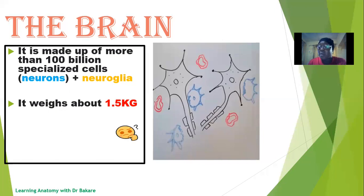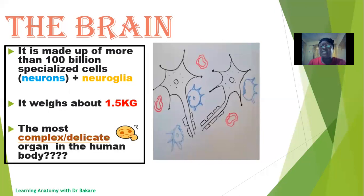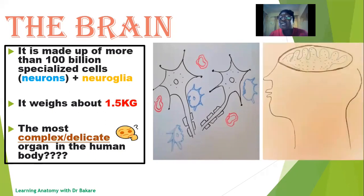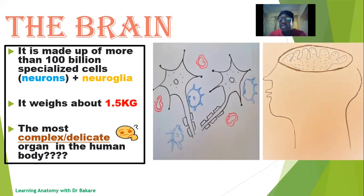The weight of the brain is about 1.5 kilograms. It is the most complex and delicate organ in the body. It is most complex in the sense that it is a connection of neurons connected from one end to the other in the form of circuits, and these circuits cannot be distorted without the functions they exhibit being impaired. The brain tissue is also delicate, which is why it is enclosed within the bony neurocranium, which helps to protect it from injury or damage.